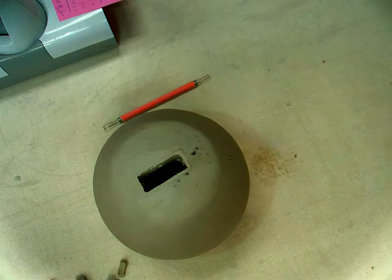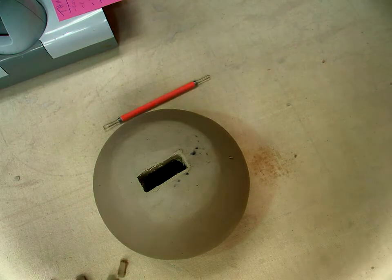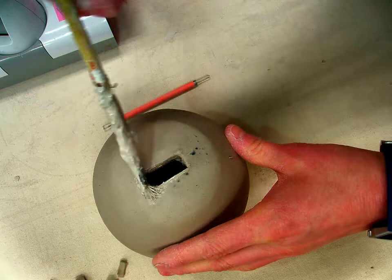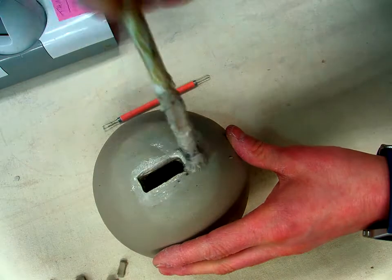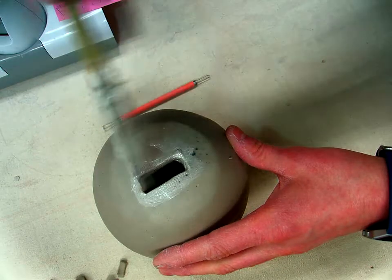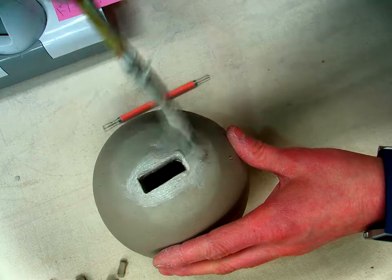So you might want to get a paint brush or a sponge. You can just take a wet paint brush and just kind of smooth those areas out. Now some people have said, well, what if I have a dollar?